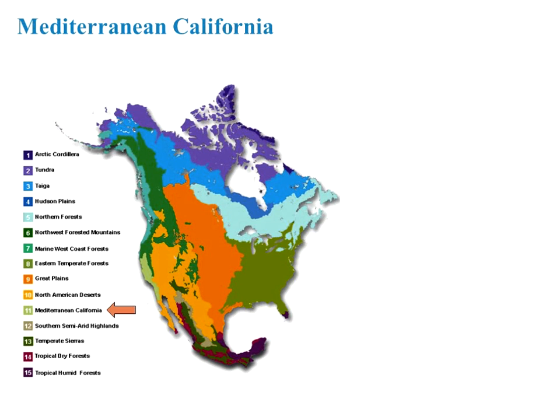I introduced this slide because different books and resources treat the biome slightly differently. This is a biome map that looks quite similar to the other maps you've seen, but notice how California has been given its own biome. This is because in California, because of the changes in elevation, we can see many of the biomes develop in a fairly short, small area of geography.